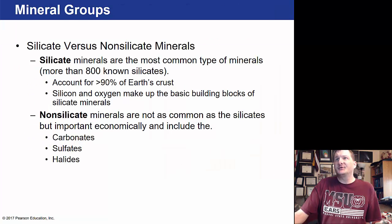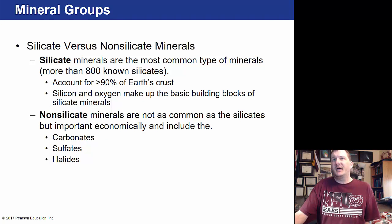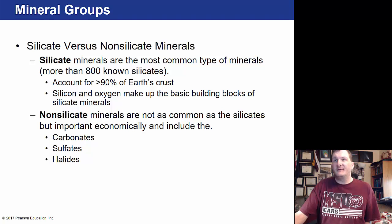Silicate minerals are the most common type — over 800 are known and they account for 90% of the earth's crust. The building blocks are silicon and oxygen. Non-silicate minerals are not as common but are economically very valuable — including carbonates, sulfates, and halides.